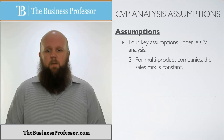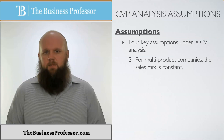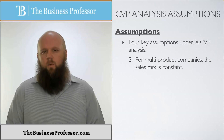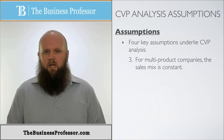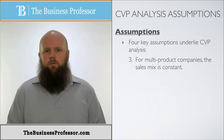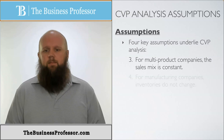For multi-product companies, the sales mix is constant — how we sell things in proportion to the total, we're going to assume that that's going to be constant. These are things that are not always factual, but these are just assumptions that we have to make in order to do CVP analyses and rely on the information.